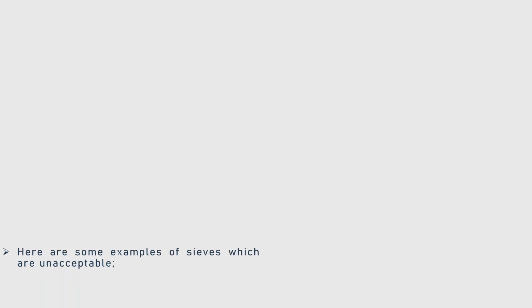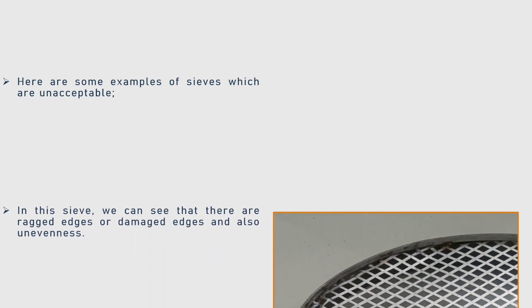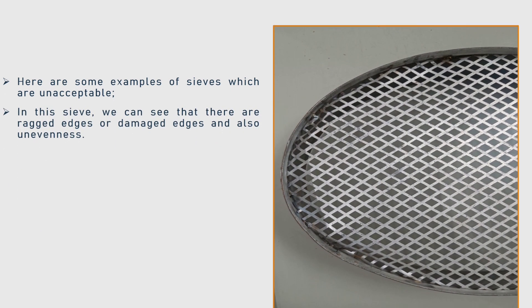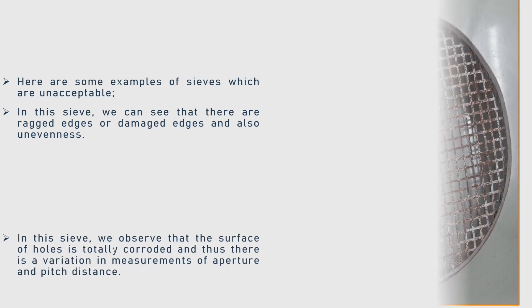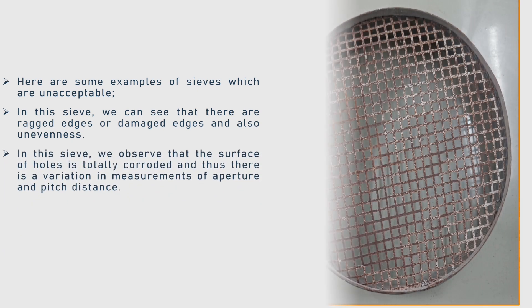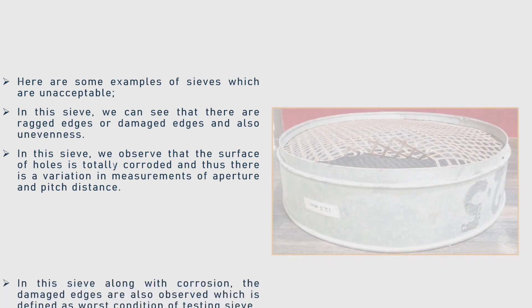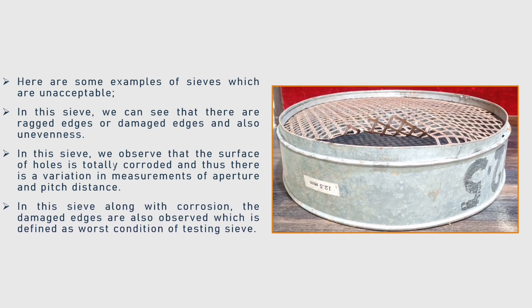Here are some examples of unacceptable sieves. In this sieve, we can see ragged or damaged edges and also unevenness. In this sieve, the surface of the holes is totally corroded, causing variation in measurements of aperture and pitch distance. In this sieve, along with corrosion, damaged edges are also observed, which represents the worst condition of a testing sieve.